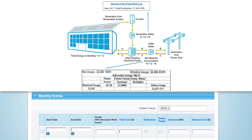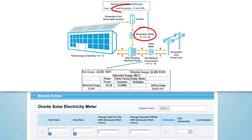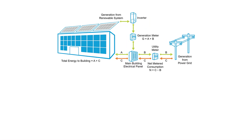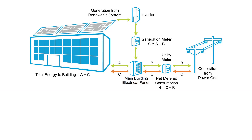A common mistake in this scenario is for Portfolio Manager users to enter the net metered consumption value as the usage within the grid electricity meter, and to enter the total on-site renewable generation as energy used on-site within the on-site solar electricity meter. However, this would over-account for the amount of renewable energy consumed at the property and under-account for the amount of grid electricity consumed. This will result in your Portfolio Manager 1-to-100 score being higher than it should be, and your source energy use intensity metric being lower than it should be.